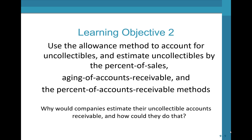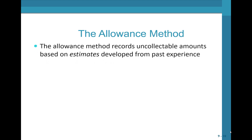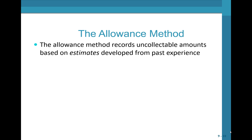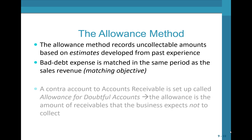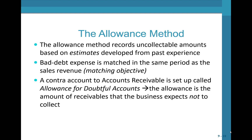The second learning objective is to use the allowance method to account for uncollectibles and estimate them by the percentage of sales, aging of AR, and the percent of AR methods. The allowance method records uncollectable amounts based on estimates developed from past experience. Bad debt expense is matched in the same period as the sales revenue — we call this matching. A contra account to AR is set up called the allowance for doubtful accounts, which represents the amount of receivables the business expects not to collect.